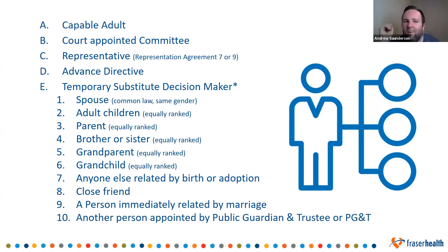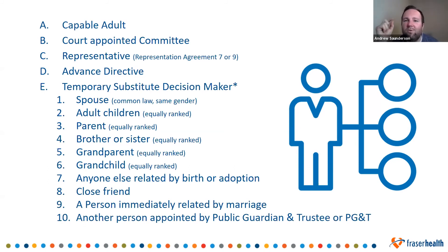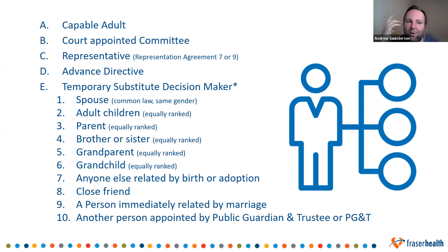Most people in British Columbia end up at letter E, because not a lot of us have a court-appointed committee, a representation agreement, or an advance directive. So we then need what's called a temporary substitute decision maker — though it really should be called a temporary substitute communicator, because a good one is just communicating your wishes, not actually having to make the decisions themselves. But that depends on whether we've talked to them or shared what's important to us.